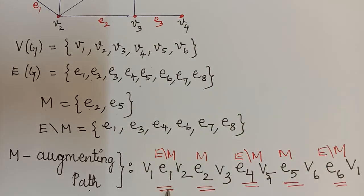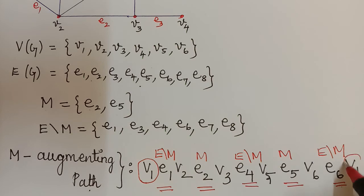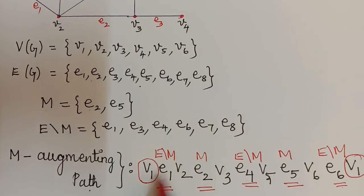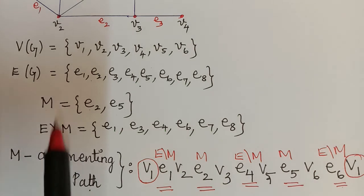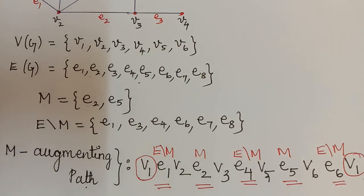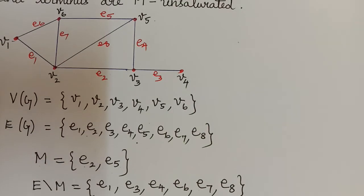The path is alternating and the origin and the terminus are M unsaturated — that is, they are not matched under M. So this path is an M augmenting path. Hope the M alternating path and the M augmenting path are now clear to you. Thank you.